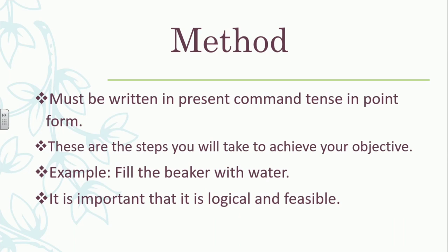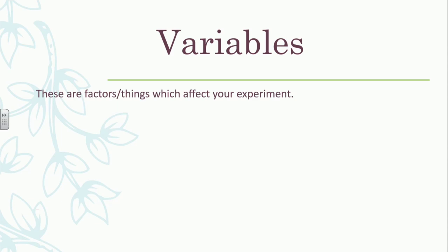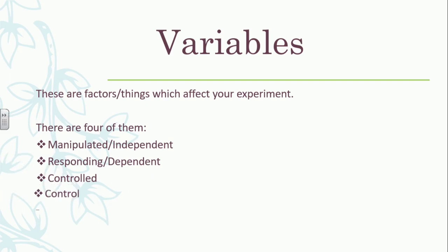Now, the big topic — variables. This is where a lot of students have problems. Your variables are factors which affect your experiment. There are about four of them: your manipulated or independent variable, your responding or dependent variable, your controlled or constant variable, and your control. We're going to look at all of these.